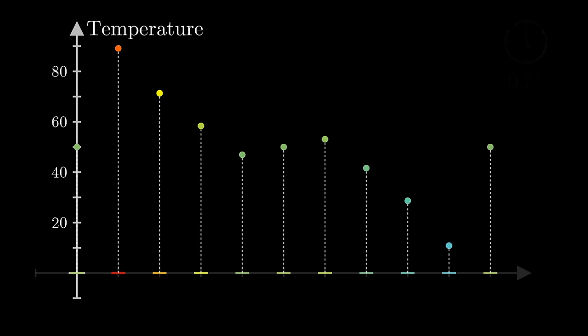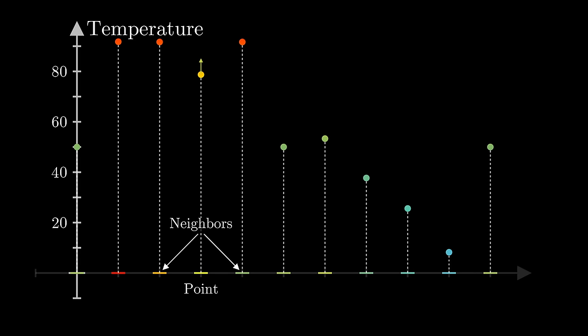The intuition here is simple. For a particular point, if its two neighbors on either side are on average hotter than it is, it will heat up. If they're cooler on average, it'll cool down.